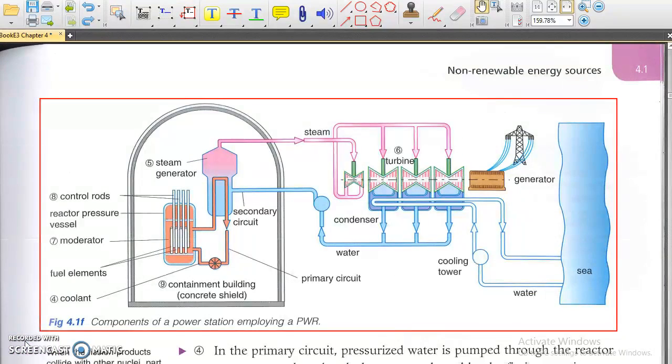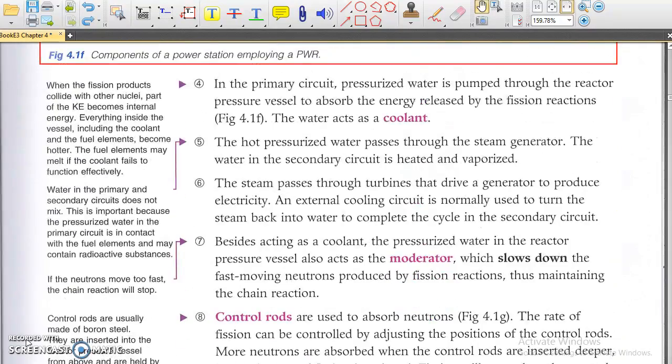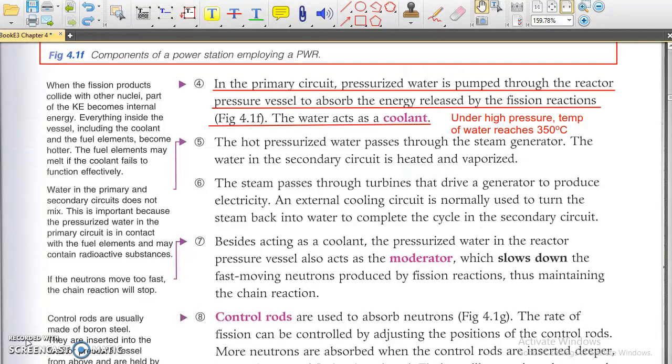In the PWR, water is used as coolant to carry away the heat from the reaction core to the steam generator. The pressurized water in the primary circuit has a high temperature of over 380 degrees Celsius, but still in liquid state, which produces steam in the secondary circuit to drive the turbine and generator as in conventional power plants.